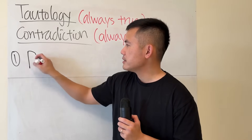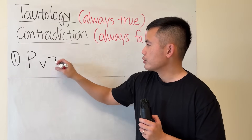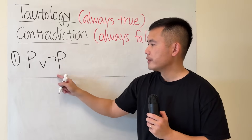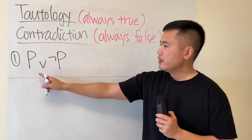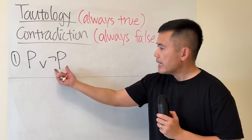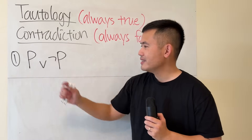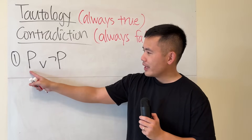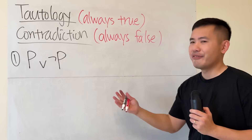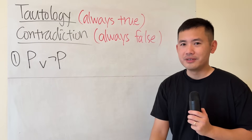The most famous example is an OR statement: p OR not p. If p stands for 'it's going to rain today,' then not p stands for 'it's not going to rain today.' The whole statement says it's either going to rain or not going to rain — and that's obviously always true. So this is a tautology.